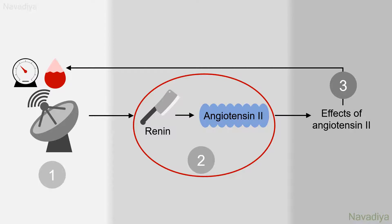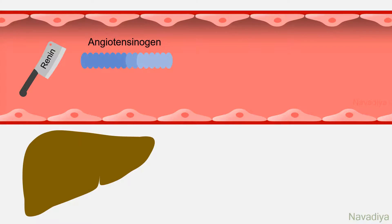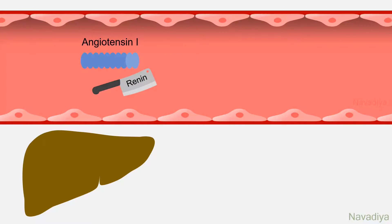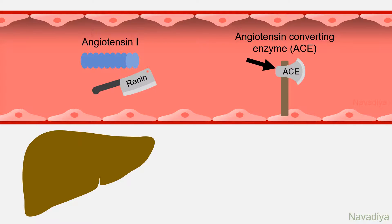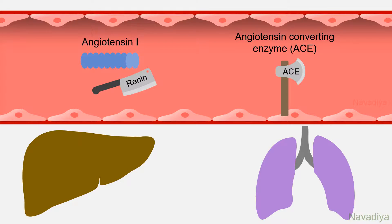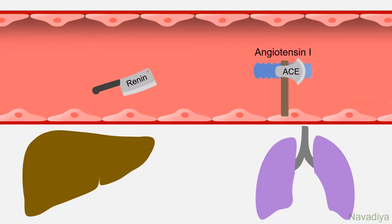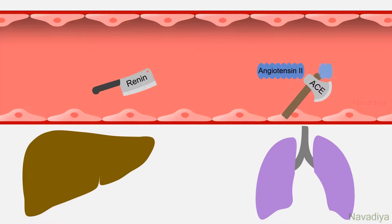Now let's see the cascade of events that result in synthesis of angiotensin II — this part is the simplest one. The liver is releasing a protein, angiotensinogen, all the time into the blood circulation. Renin cleaves off a 10 amino acid peptide, angiotensin I, from it. Angiotensin I is then acted upon by another enzyme called angiotensin converting enzyme. This enzyme is present on the luminal surface of vascular endothelium throughout the body, but is more abundant in the lungs. It removes two more amino acids from angiotensin I and produces angiotensin II.